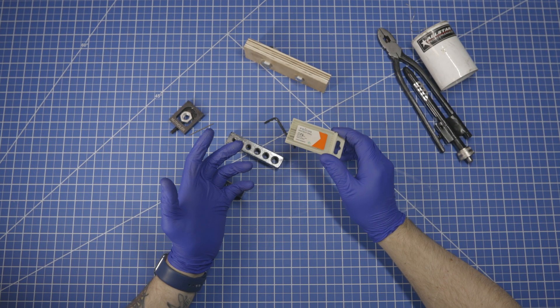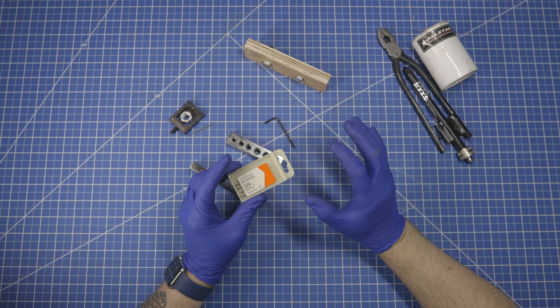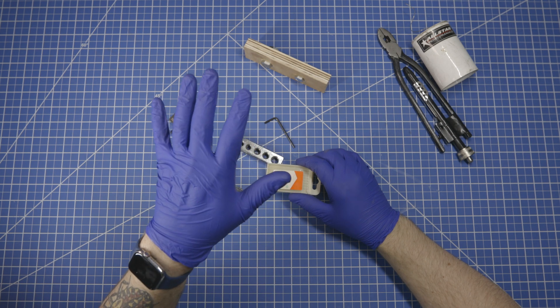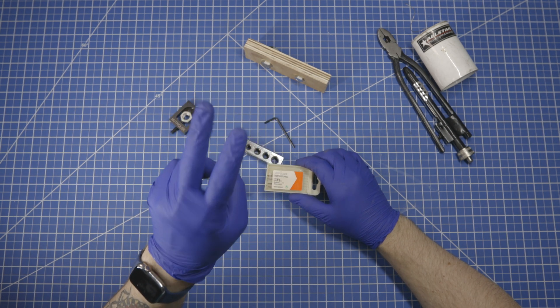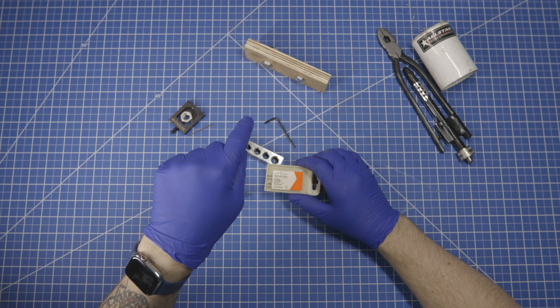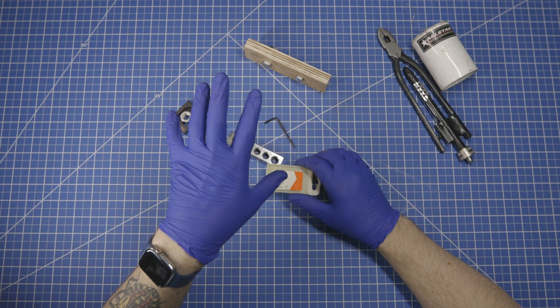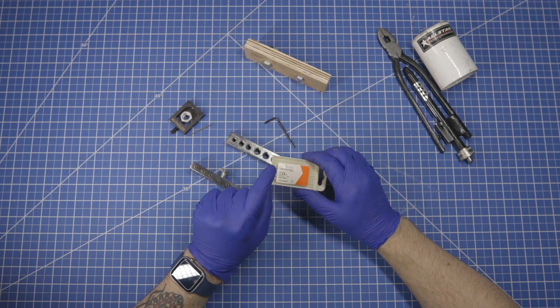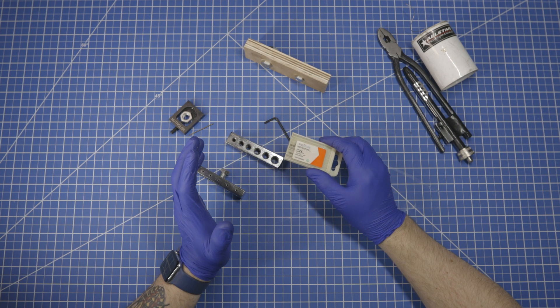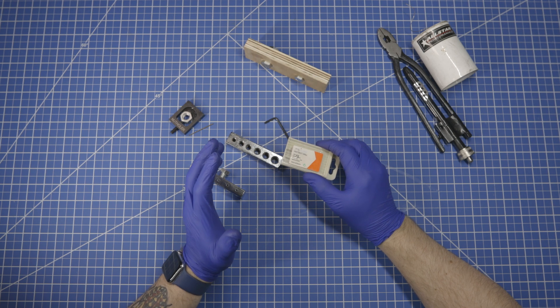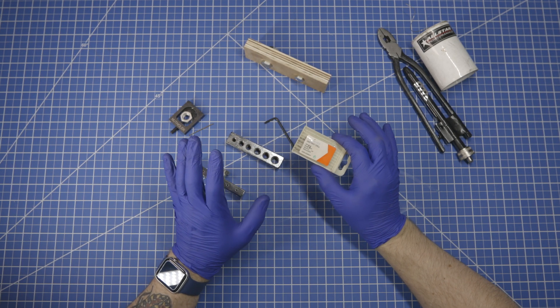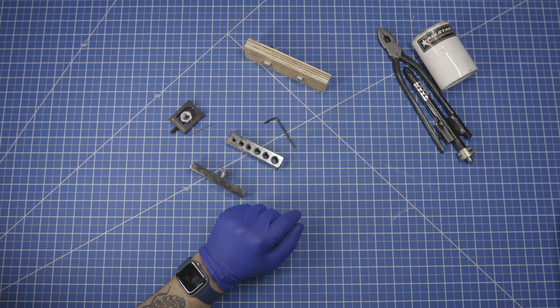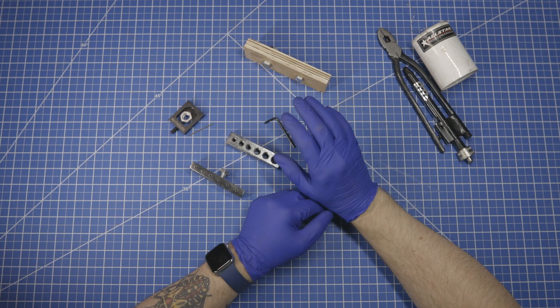You're still going to break one here or there, so I cannot recommend highly enough that, one, you drill slower than you think you need to. And two, don't drill the only nut or bolt of something that you have. Have extras, because if the drill bit breaks off in the bolt, and this tiny, tiny drill bit breaks off in the bolt or in the nut, it's just such a pain in the butt. So, that's my strong recommendation, is don't put all your eggs in that one basket of, I only have this one nut and I need to drill it. Don't do that.